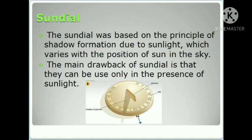Sundial: A sundial is another type of clock used in ancient times to measure time. It was based on the principle of shadow formation due to sunlight, which varies with the position of the sun in the sky. As shown in the diagram, a clock with time markings uses the sun's shadow to indicate the time. The main drawback of the sundial is that it can only be used in the presence of sunlight — on cloudy days or at night, it cannot be used.